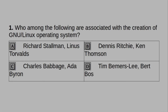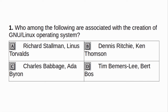Chapter 10: Operating System, Part 1. Who among the following are associated with the creation of GNU Linux Operating System? a. Richard Stallman, Linus Torvalds. b. Dennis Ritchie, Ken Thompson. c. Charles Babbage, Ada Byron. d. Tim Berners-Lee, Bert Boss. Answer: a. Richard Stallman, Linus Torvalds.